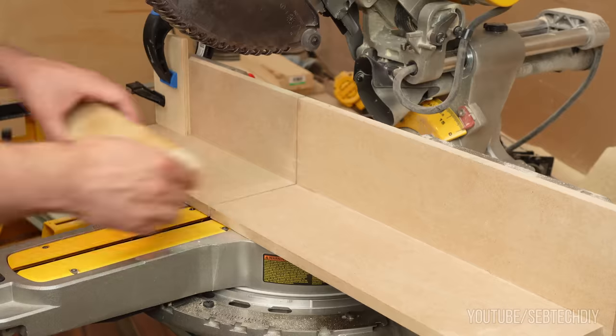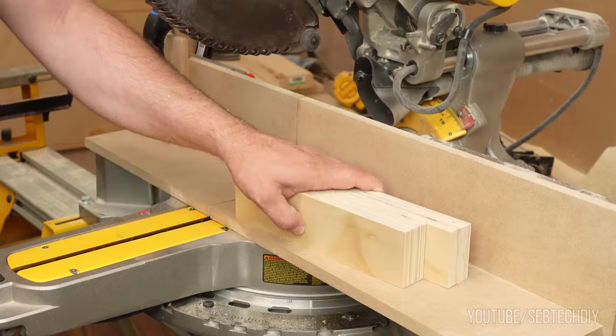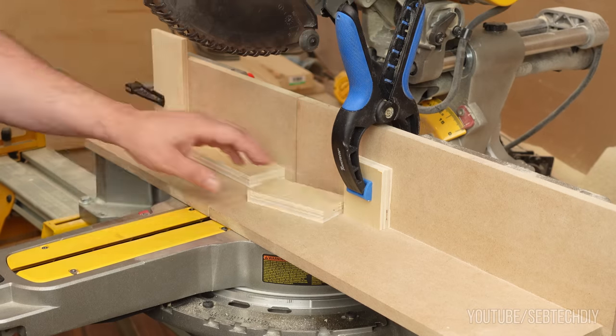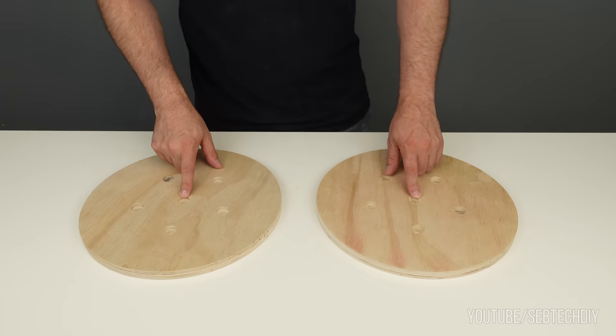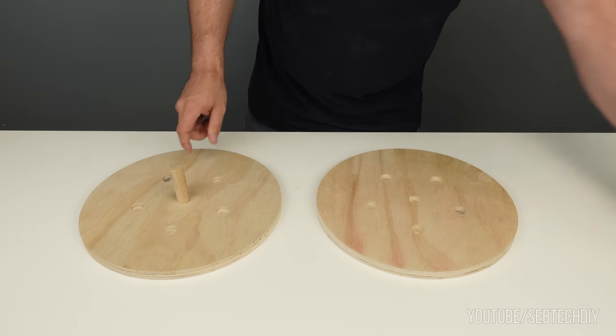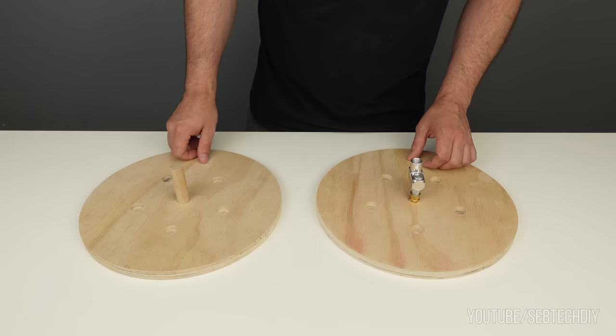I also cut all my plywood pieces for this project. Check my description for more details about the cutting list. Now it's time to assemble every part together. On one side the axle will be the dowel. On the other side it will be the fitting.